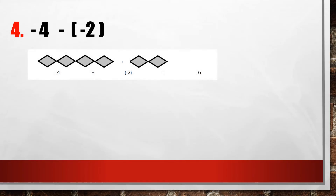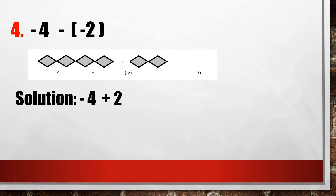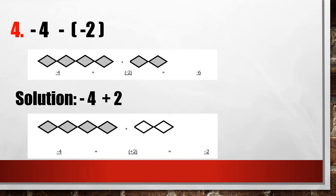Number 4: negative 4 minus negative 2. By representation, negative 4 is represented by colored tiles, and negative 2 also by colored tiles. The solution changes to negative 4 plus 2: change the subtrahend sign — the minus sign becomes plus and negative 2 becomes positive 2, represented by a non-colored tile. So negative 4 plus 2 is equal to negative 2.